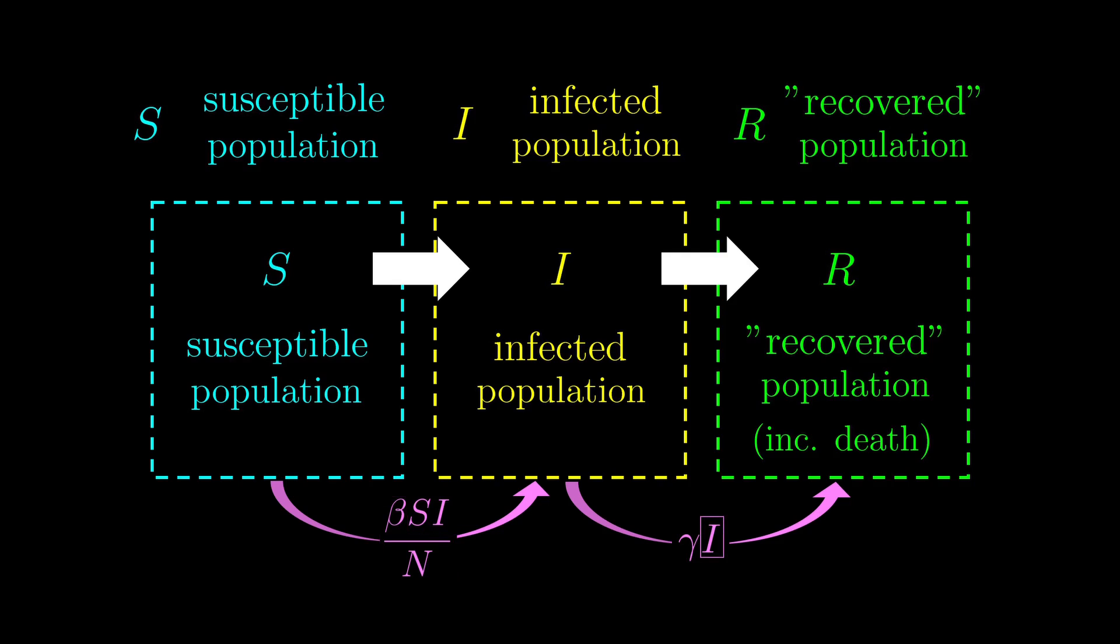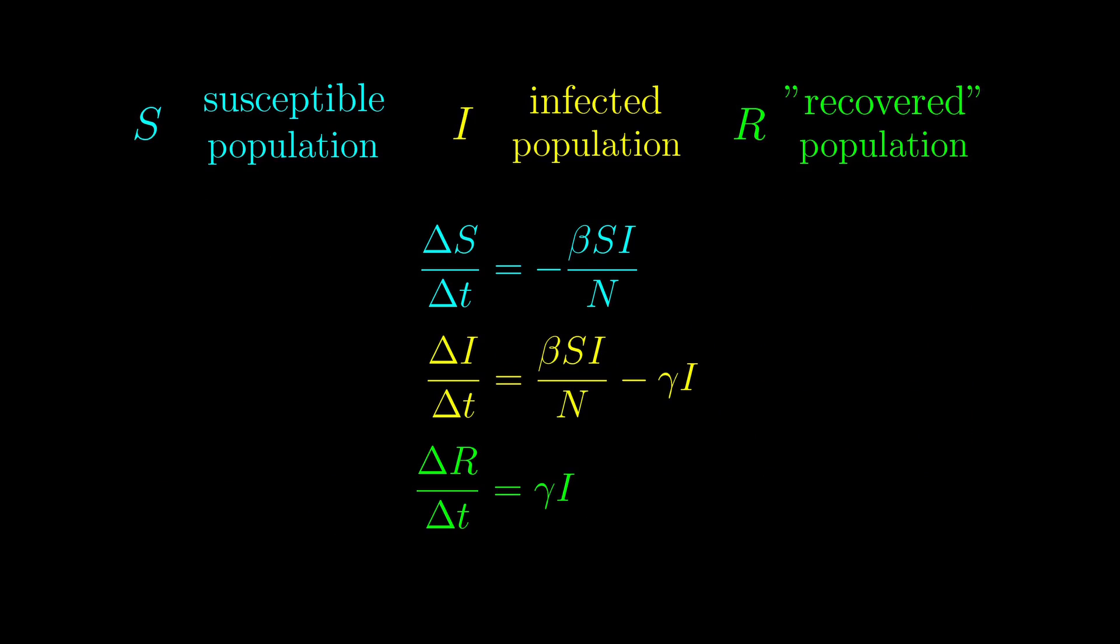Now for the second transition, the more people get infected, the more people recover or die from the disease each day. So these equations now make more sense. And we want to find out the constants beta and gamma for coronavirus.